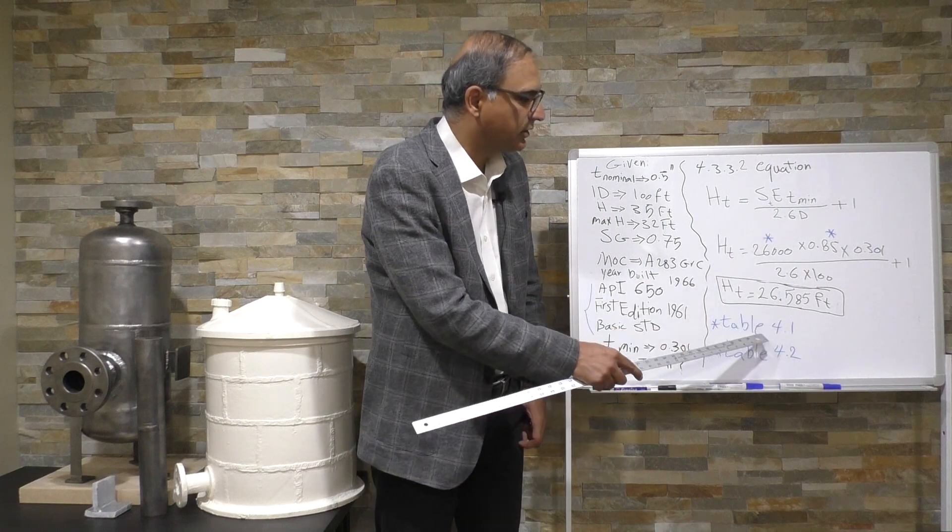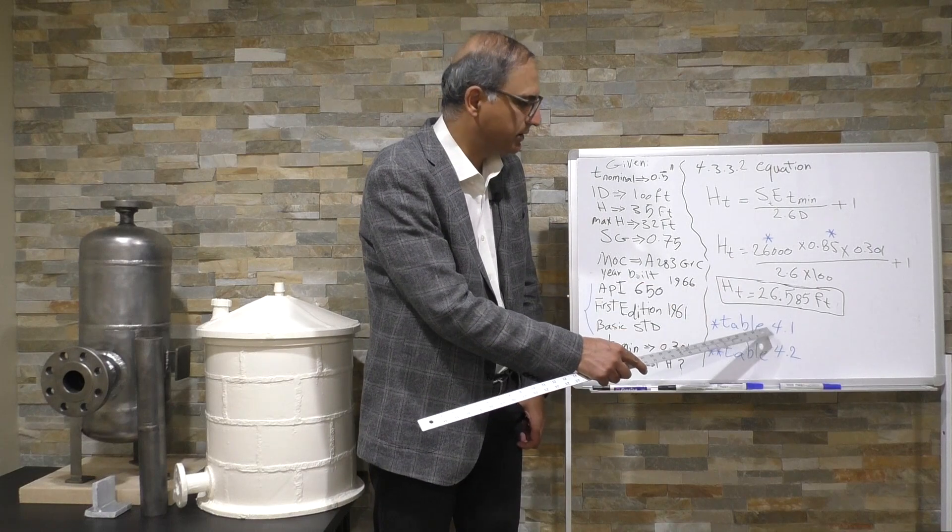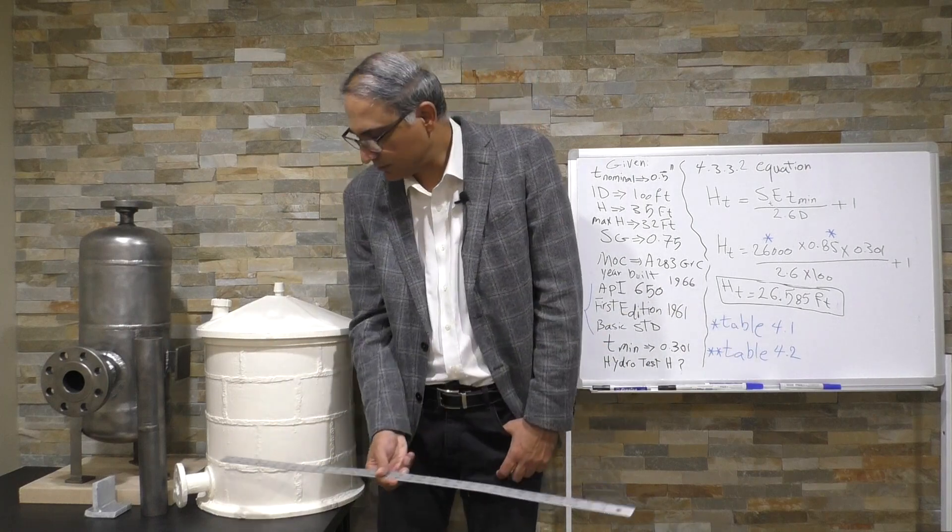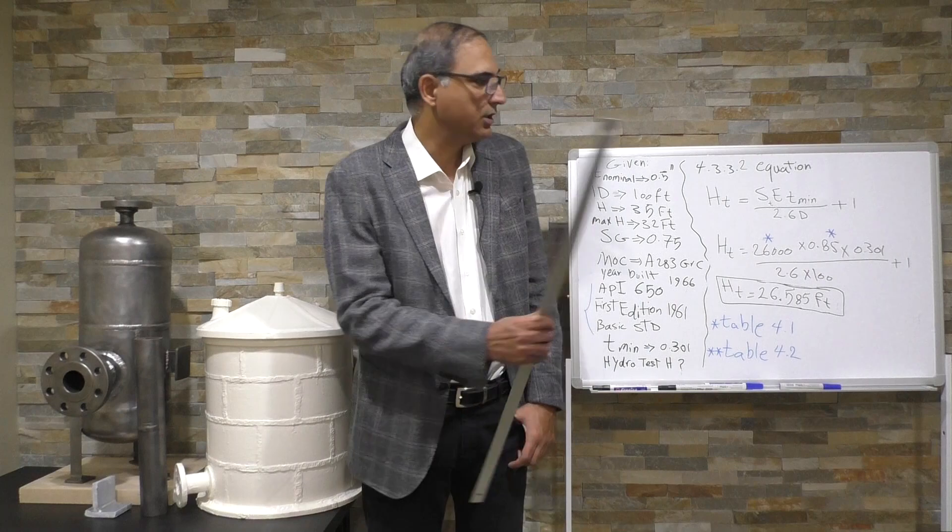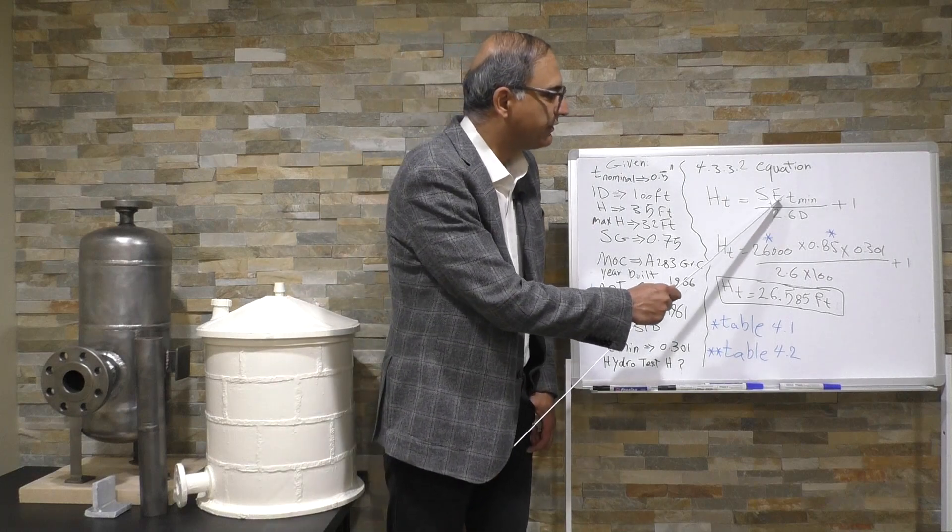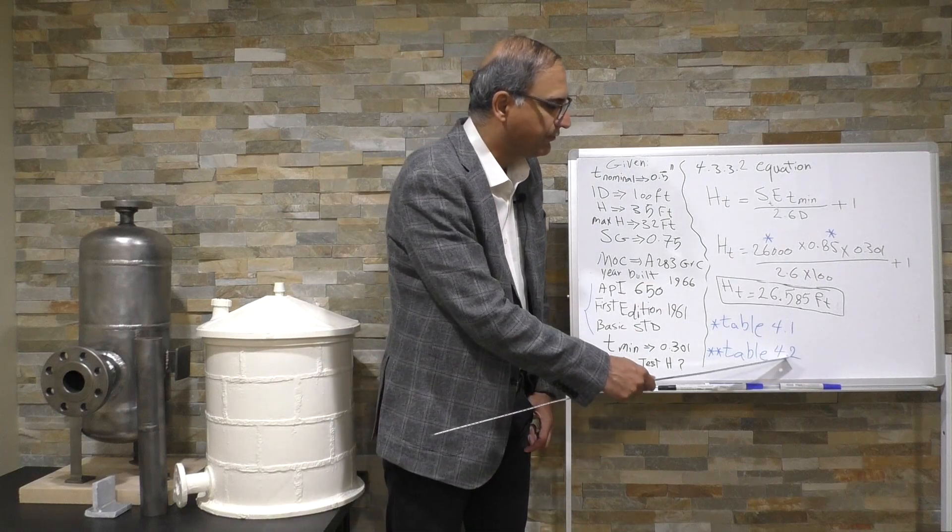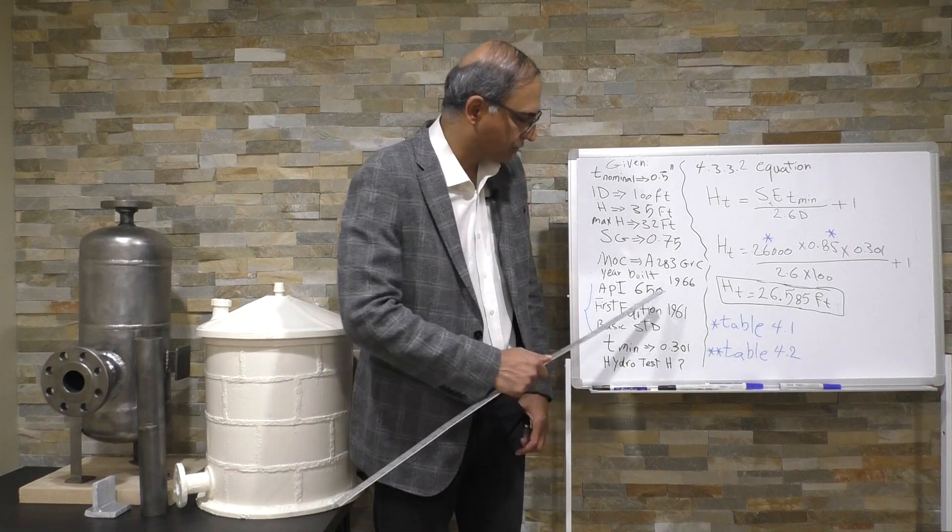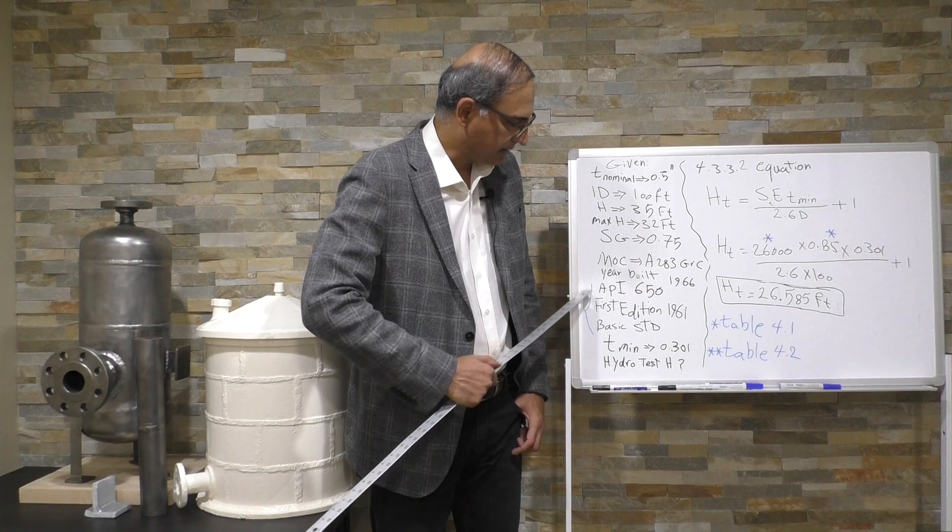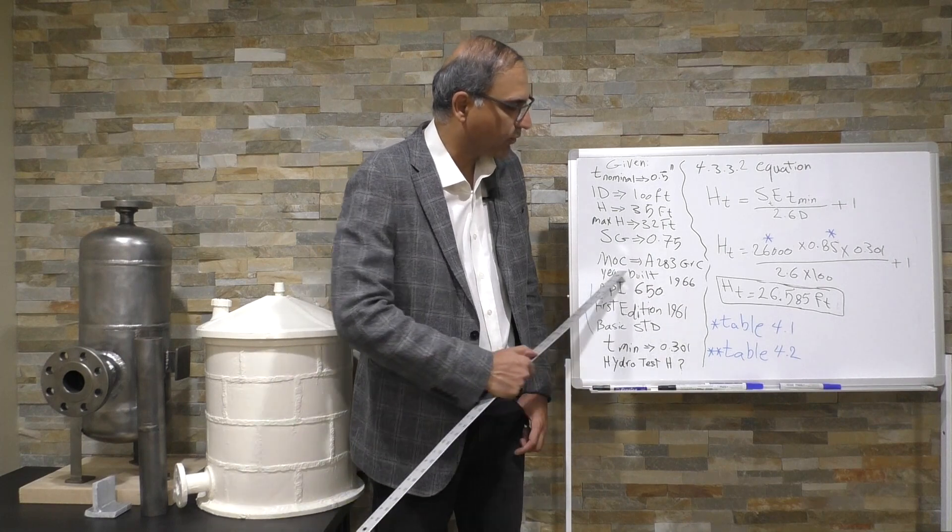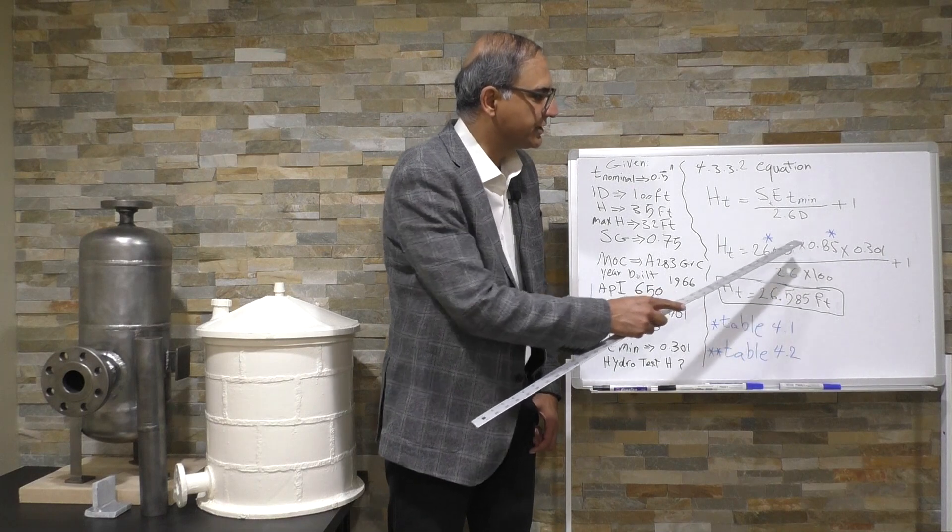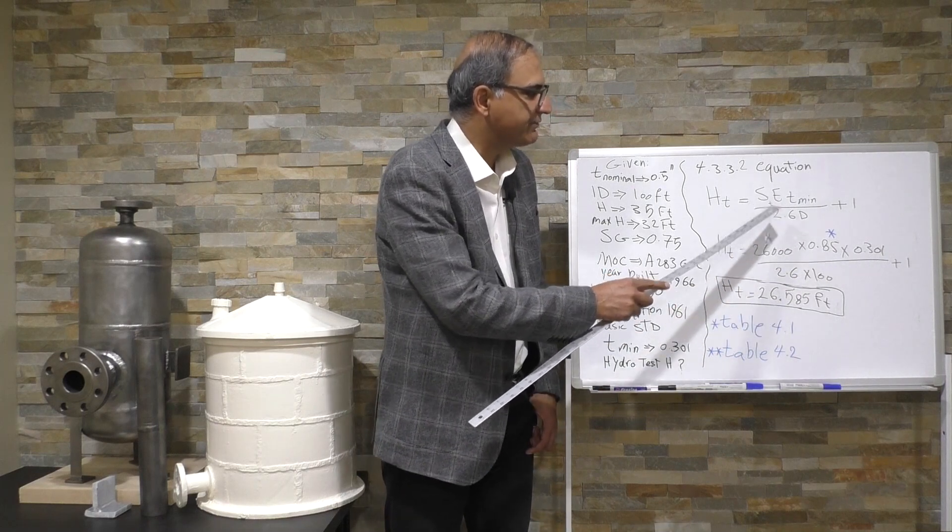S is allowable stress, we are going to read from table 4.1. We have the material, and we said we are repairing the first shell course, we are going to read that number. Joint efficiency, we are going to go to table 4.2. In table 4.2, you are going to see the design year that the storage tank was designed, and it's going to give us the joint efficiency.